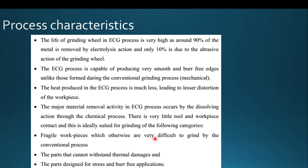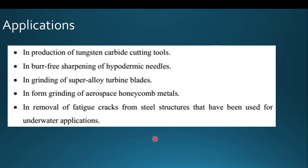Very high brittleness materials can be easily machined without thermal damage and with burr-free results. Applications of electrochemical grinding include: production of tungsten carbide cutting tools, burr-free sharpening of hypodermic needles, grinding of superalloy turbine blades, aerospace honeycomb metals, and removal of fatigue cracks from steel structures.